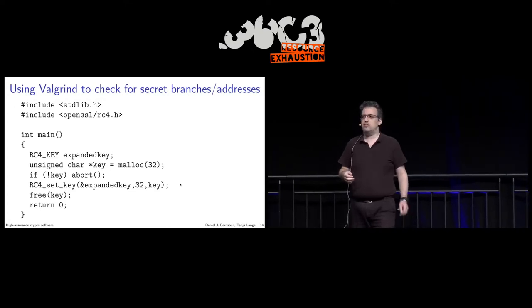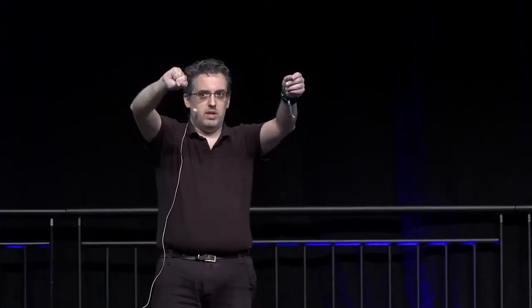Then you run this program under Valgrind and run a memory sanitizer to find memory leaks. You can run Valgrind without recompiling anything with OpenSSL — you just run Valgrind, it runs the program, calls all these functions, makes the key, and tracks all memory that was allocated.